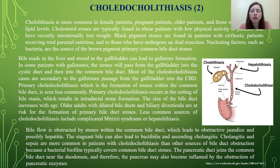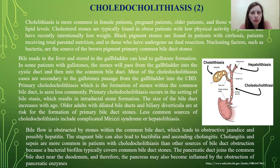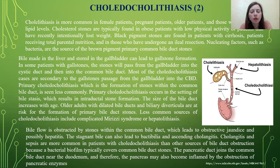Bile made in the liver and stored in the gallbladder can lead to gallstone formation. In some patients with gallstones, the stones will pass from the gallbladder into the cystic duct and then into the common bile duct. Most cases of choledocholithiasis are secondary to gallstone passage from the gallbladder. Primary choledocholithiasis — formation of stones within the common bile duct — is less common and occurs in the setting of bile stasis, which results in intraductal stone formation. The size of the bile duct increases with age, and adults with dilated bile ducts and biliary diverticula are at risk for primary bile duct stone formation.